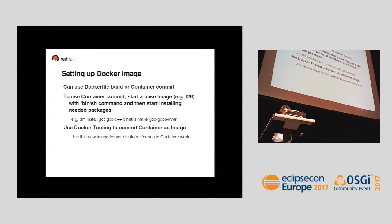One benefit is that you can mount your project in when you do this — create your shell on the base image, try building it, and when you get it working, when you commit the container, all of your mounted volumes are not part of that image. So it's a way for you to experiment and say, 'I forgot this tool, I forgot that tool.' Use whichever approach you prefer.